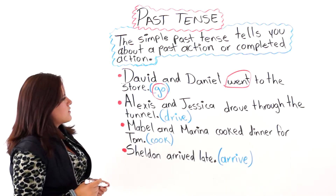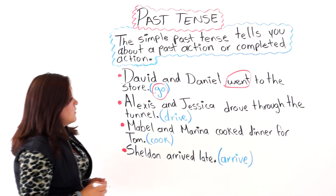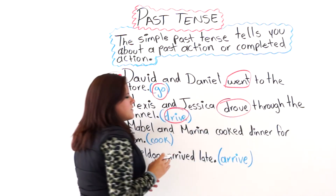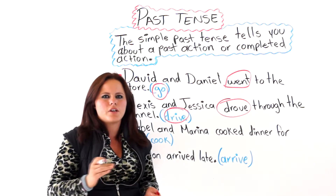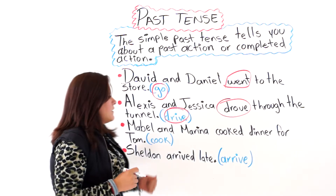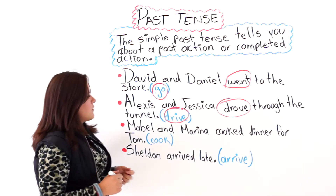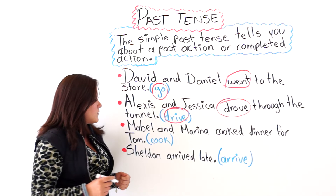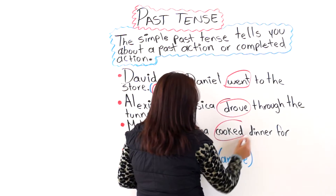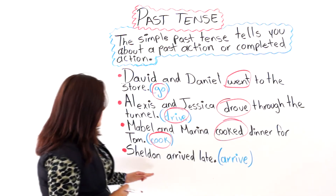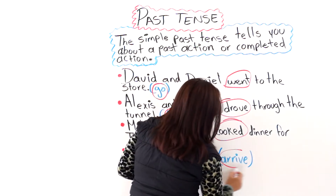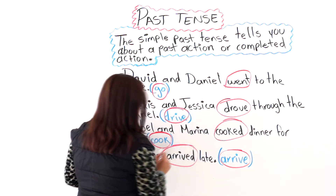Alexis and Jessica drove through the tunnel. We are using the verb 'drive' in the simple past tense, so we know that it is a simple past — what happened yesterday, a day ago, or a week ago. The next one says: Mabel and Marina cooked dinner for Tom. We are using the verb 'cook' in the past tense. And the third one says: Sheldon arrived late. We are using the verb 'arrive' in the simple past tense.